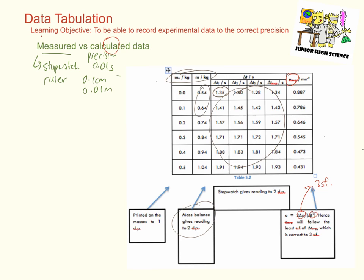Now for time interval, as you can see in the table itself, 1.34, 1.43, so on and so forth, all these are data with three significant figures.